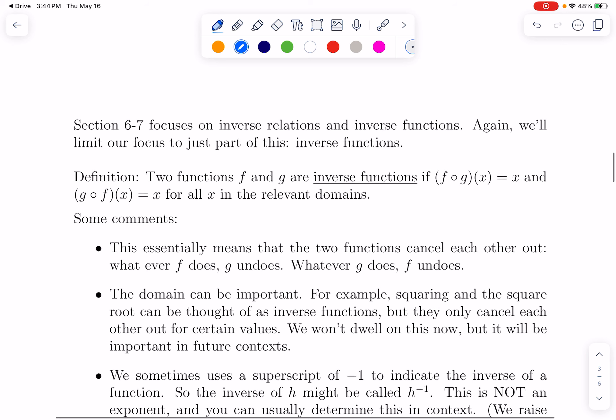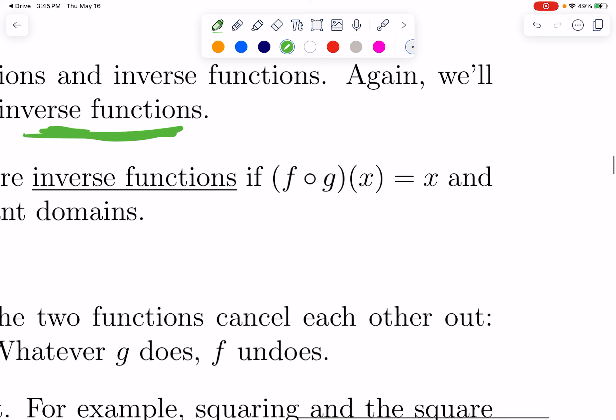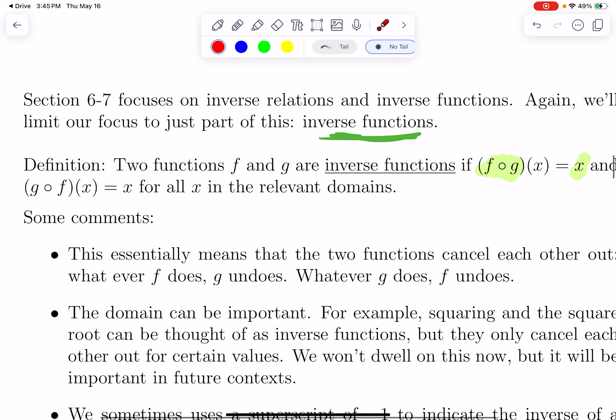Okay, so now we'll move on to section 6-7, which talks about inverse relations and inverse functions, but we're really going to focus on inverse functions. So functions are inverse functions if essentially whatever one of them does, the other one undoes. So here is our very official way of saying it. If we do F circle G of X, we just get back to X, right? This is saying if I do F and G back to back, it's as though I didn't do anything. And technically speaking, it's true in the other order as well. G of F of X is X. There are two functions where when I do them back to back, I just get what I started with.